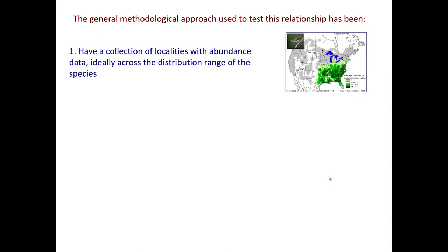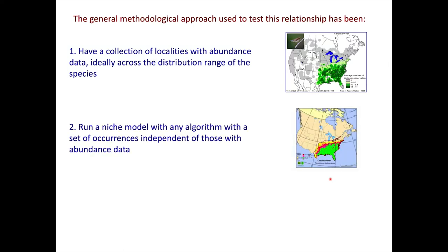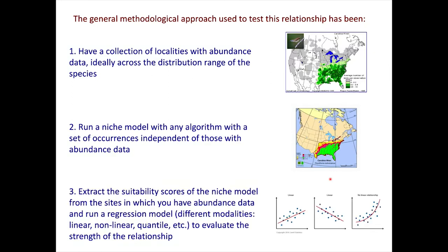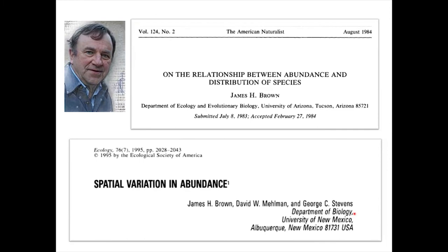The general methodological approach for this type of analysis starts with collecting localities where you have abundance data across the geographic range of a species. You then use a separate dataset—not the abundance data—to produce a model with the algorithm of your choice. You then extract the suitability values at the pixels corresponding to your abundance localities and perform some form of regression analysis, linear or non-linear, to assess the relationship or correlation between suitability and abundance.